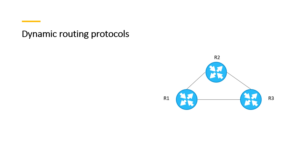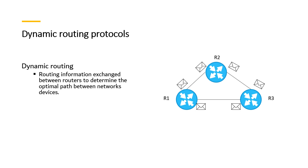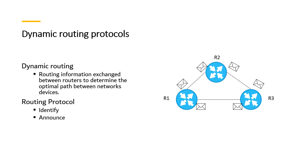Dynamic routing is a mechanism through which routing information is exchanged between routers to determine the optimal path between network devices. A routing protocol is used to identify and announce the network paths.